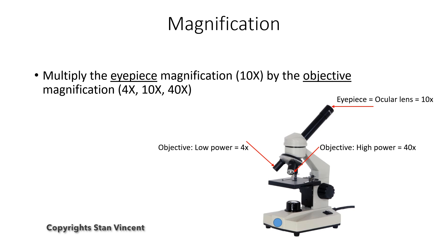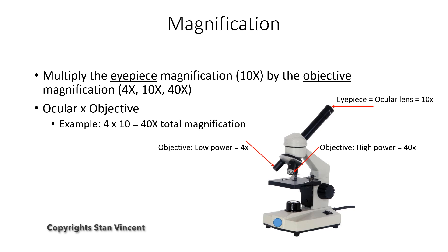So if you place an object or a slide and use the smallest objective and look through the ocular, the magnification should be 10x times 4x, which is 40 times magnification. Or if you use the 10x objective, the magnification is going to be 100 — 10 times 10. And if you use the objective with 40x magnification, the highest magnification you can obtain is 10 times 40, which is 400 times. That's how you calculate the magnification of the object.